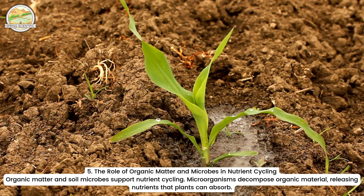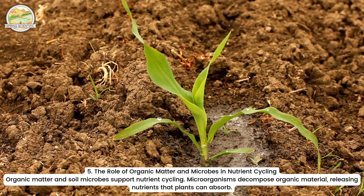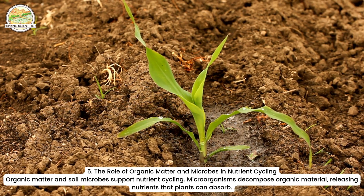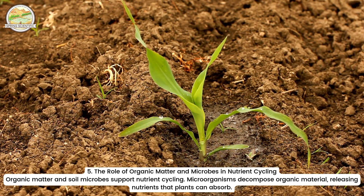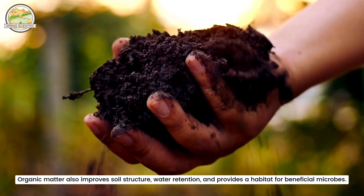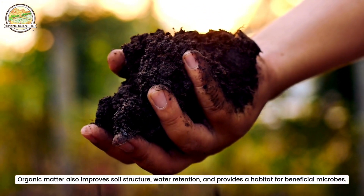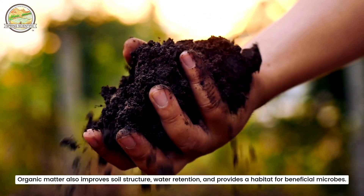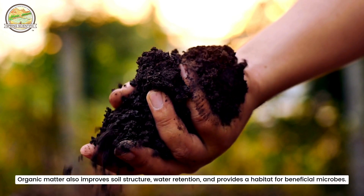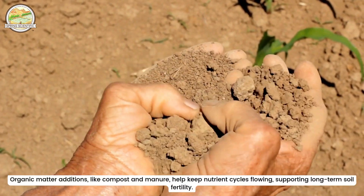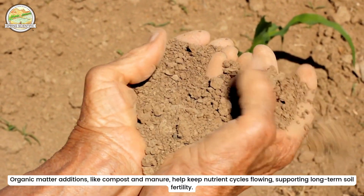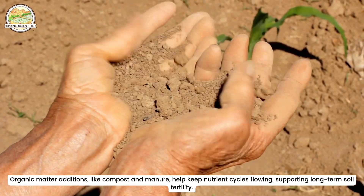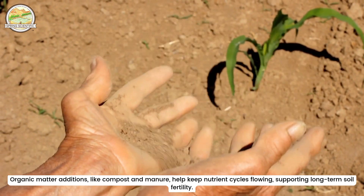Organic matter and soil microbes play a key role in nutrient cycling. Microorganisms decompose organic material, releasing nutrients that plants can absorb. Organic matter also improves soil structure, water retention, and provides a habitat for beneficial microbes. Organic matter additions like compost and manure help keep nutrient cycles flowing, supporting long-term soil fertility.